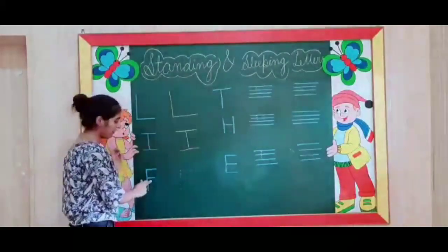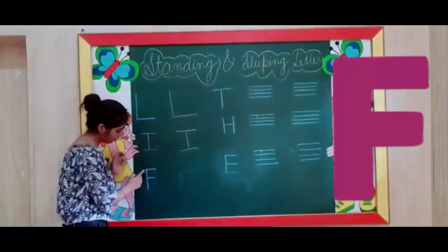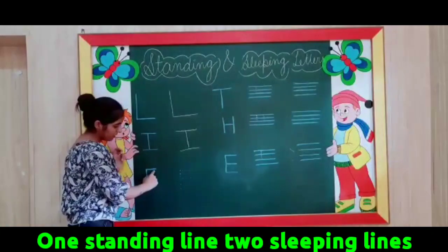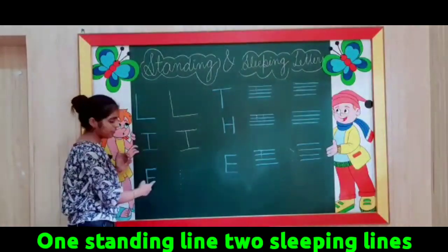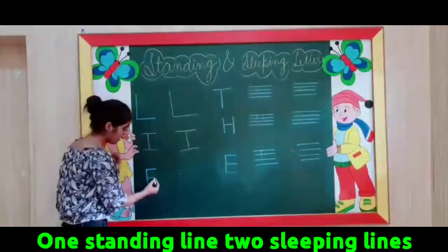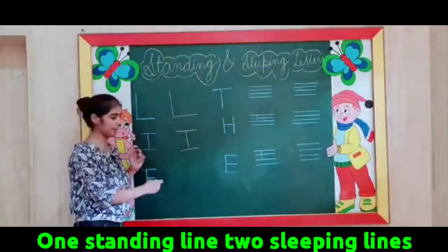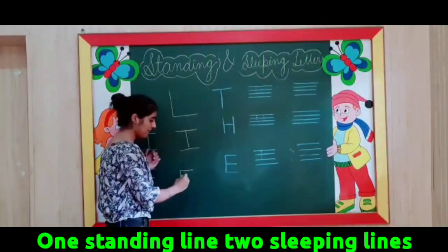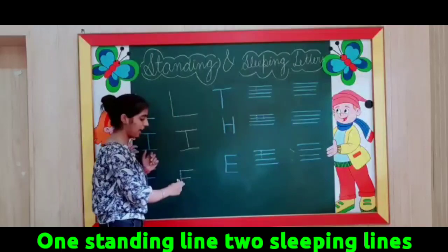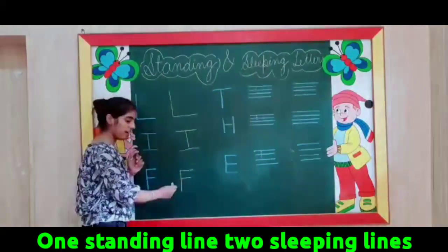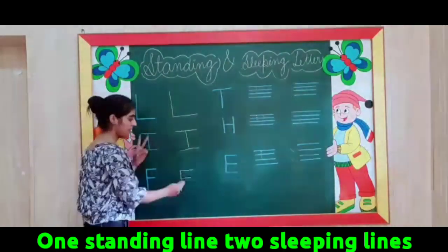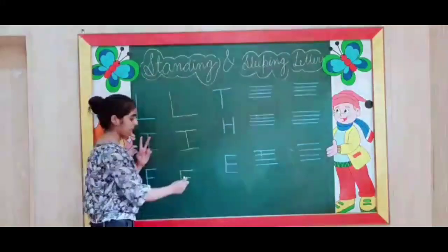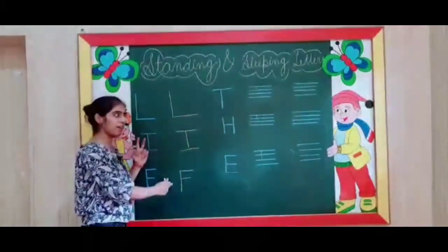Next letter we have is F — F with one standing line. Next is a sleeping line, and another sleeping line that is shorter than the first sleeping line. Standing line, sleeping line, then again sleeping line like this. Very good. One standing line and two sleeping lines.